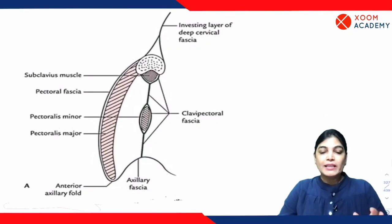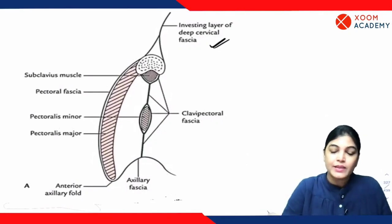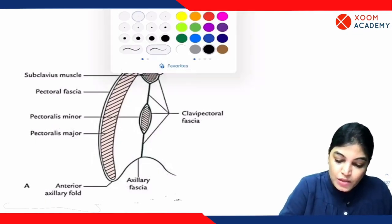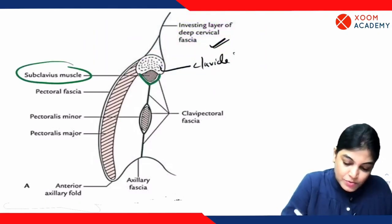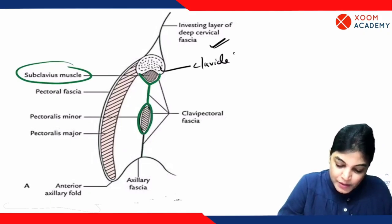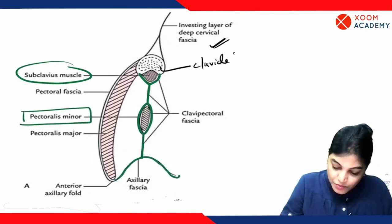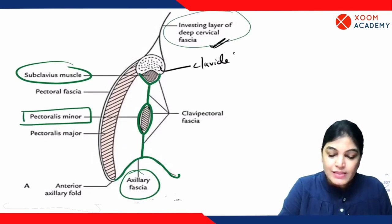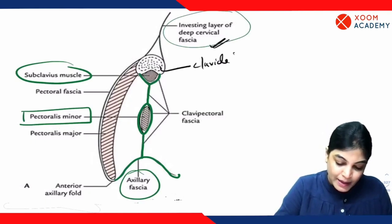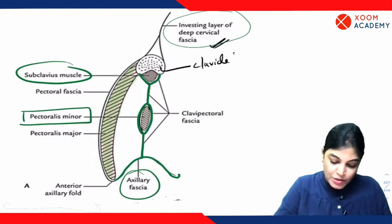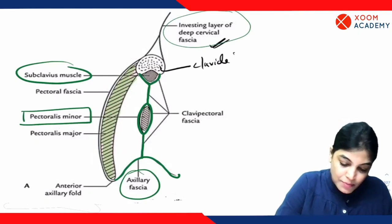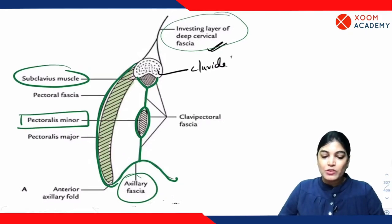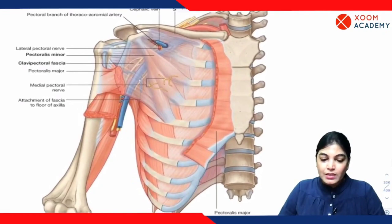Now let's talk about the horizontal extent. I'd like to show you a schematic diagram. You can see here the investing layer of deep cervical fascia, and lower to the level of the clavicle bone, the clavipectoral fascia encloses the subclavius muscle. Lower down it splits to enclose the pectoralis minor muscle, and inferiorly it merges with the axillary fascia. Its posterior layer merges with the investing layer of deep cervical fascia. Pectoralis major muscle is covered by a separate fascia called the pectoral fascia.